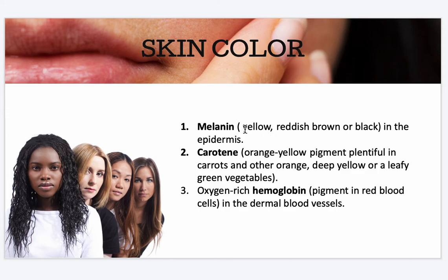Skin color is contributed by melanin, which ranges from yellow, reddish, brown to black in the epidermis. Carotene is an orange-yellow pigment deposited in the stratum corneum and subcutaneous tissue, plentiful in carrots and other orange, deep yellow, or leafy green vegetables — the skin tends to take on a yellow-orange cast when a person eats large amounts of carotene-rich foods. Oxygen-rich hemoglobin, the pigment in red blood cells in dermal blood vessels, also contributes to skin color.